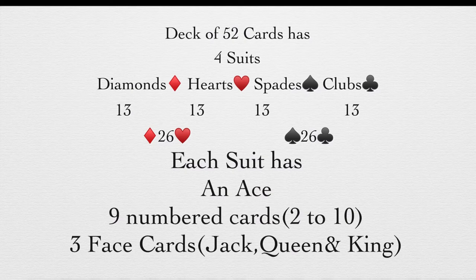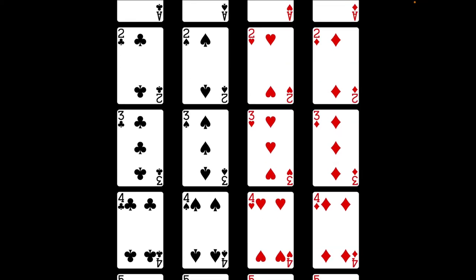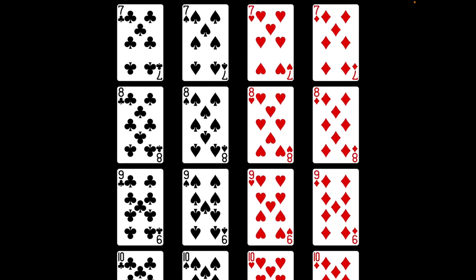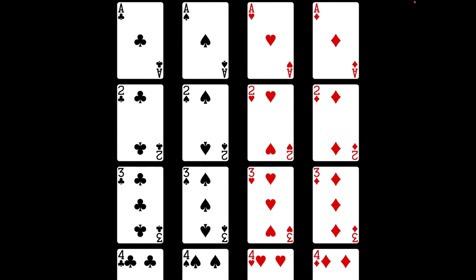The numbered cards are from two to ten, and we have three face cards: the jack, queen, and king. You can see all 13 cards of each suit here. We have one ace in each suit, then two through ten as numbered cards, and then jack, queen, and king as the face cards. Ace is neither a face card nor a numbered card.